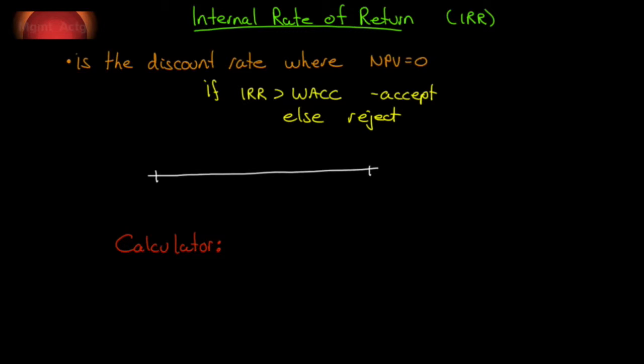We're done with net present value. Now we can look at the internal rate of return and actually this one's far simpler. Not as powerful as NPV, but let's see where we get to. So the internal rate of return on a project is the discount rate used where the net present value equals zero.